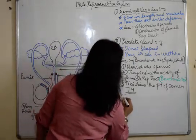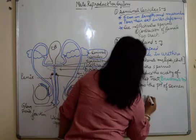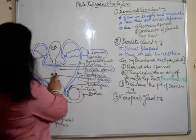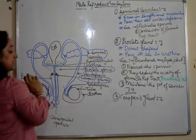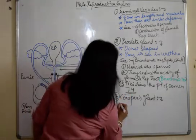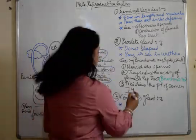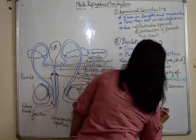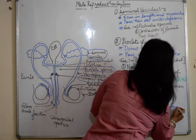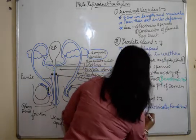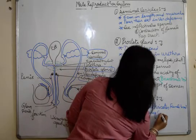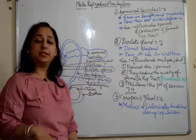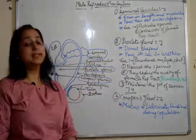The third type of gland is cowper's gland. Now cowper's gland is present here. There are two small glands present here at the opening of the penis. They produce a secretion which is basically mucus and its function is it lubricates the female tract during copulation. During the process of copulation, they lubricate the female reproductive tract.